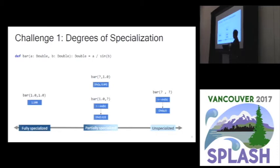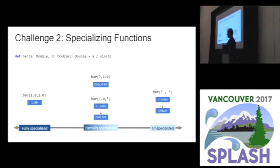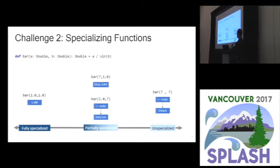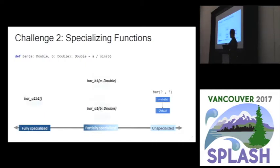What we tried to solve are three major challenges. First, we want to abstract over various degrees of specialization. In this simple function, we might want to go over the whole range from fully specialized to unspecialized — meaning either we know the inputs ahead of time and can fully pre-compute the result at code generation time, we might only partially know the input, or we might not know the input at all. Our goal is to abstract over all this space.